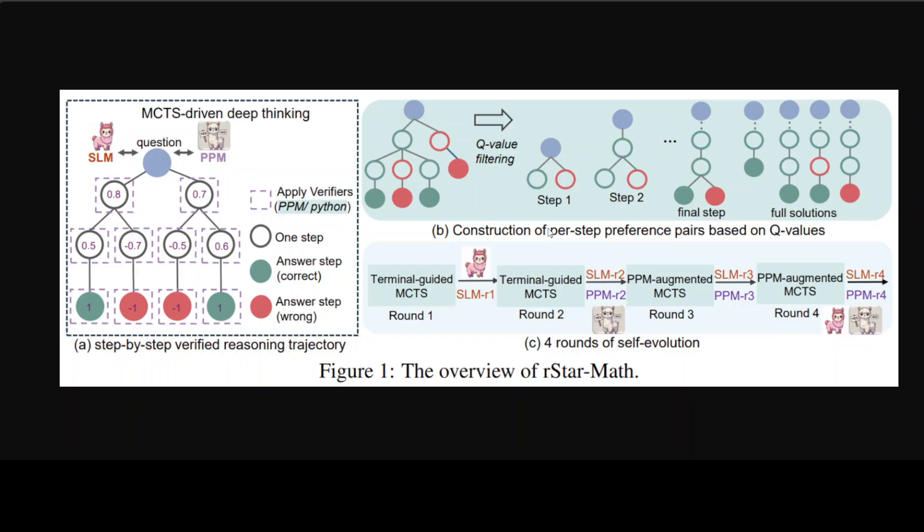The way it works is quite simple. First, it starts with the initial math problem. It then generates multiple possible next steps, evaluates each next step to see how promising it is, selects the most promising next step and repeats the process. Eventually it selects the best solution from the explored possibilities, and that's how it prepares this trajectory.